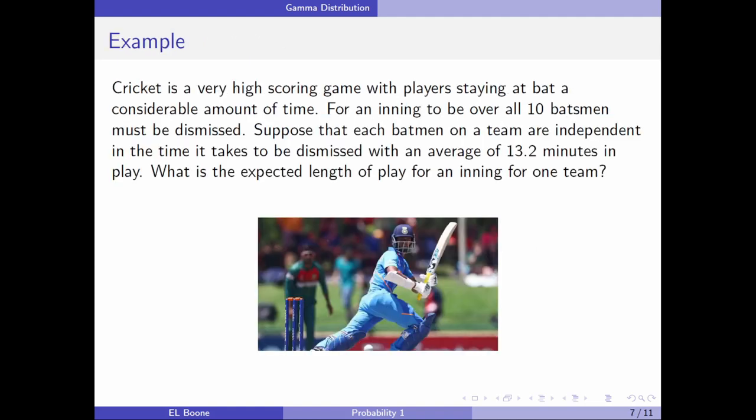Let's look at an example. Cricket is a very high-scoring game with players staying at bat a considerable amount of time. For an inning, overall, ten batsmen must be dismissed for the inning to be over. Suppose that each batsman on the team are independent, and the time for them to be dismissed is around 13.2 minutes. What is the expected length of play for an inning for one team? Notice that we have to see ten of these things occur - it's more than just one, and it's absolutely clear if they're out or not.